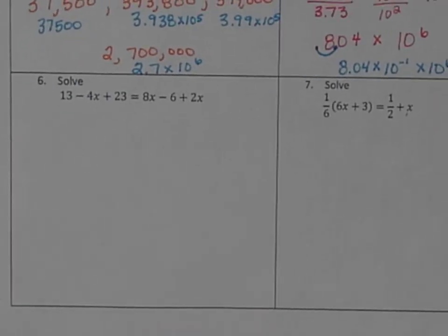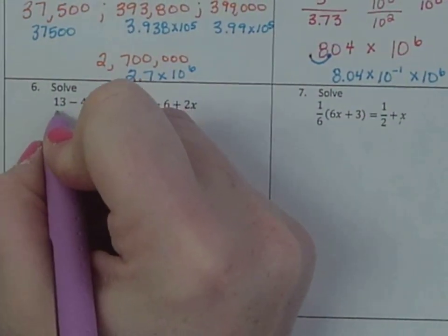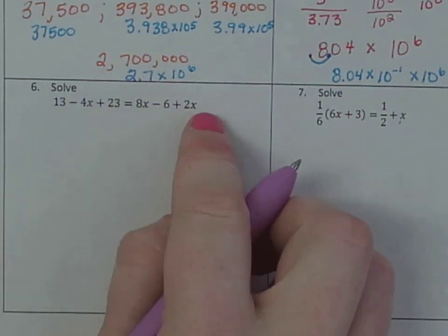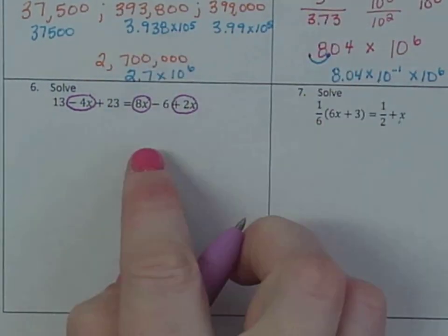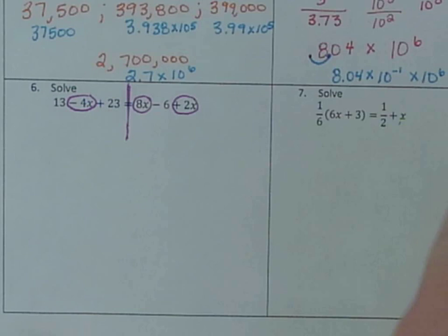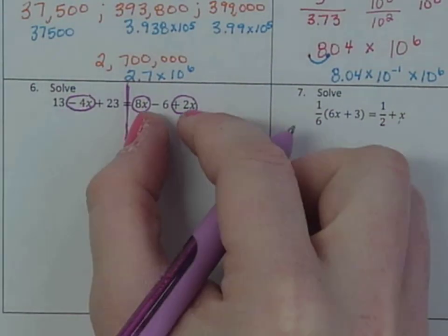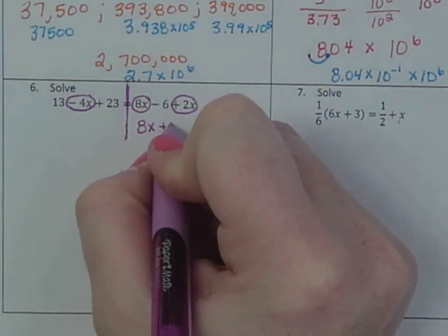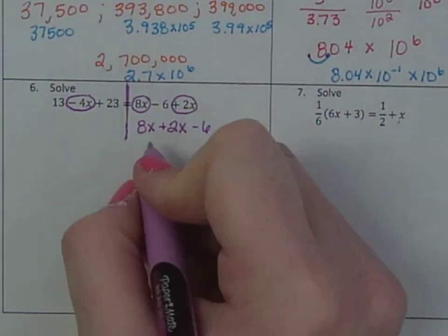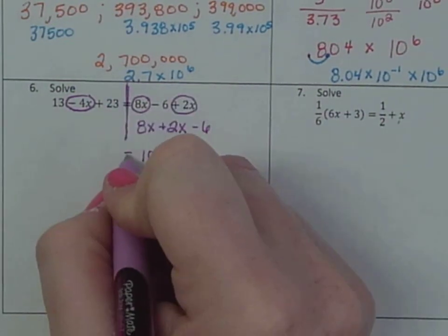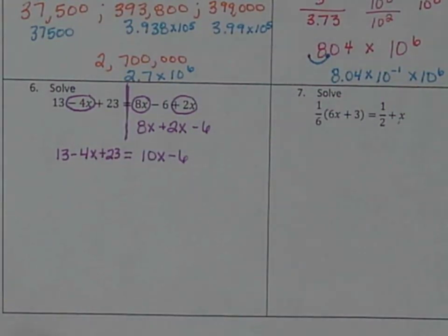Okay. Two more problems. All right. Solve. So if I wanted to solve these two, notice I have multiple things with x. So I always go and circle everything with x, and I'm going to make it very obvious where the equal sign is. So these two are on the same side. This one is on the opposite. So I'm going to combine those first. So I'm going to say 8x plus 2x. I'm going to still keep the negative 6. If I have 8 here and 2 more here, that would be 10x minus 6. Bring down the equals. Bring down the 13 minus 4x plus 23.